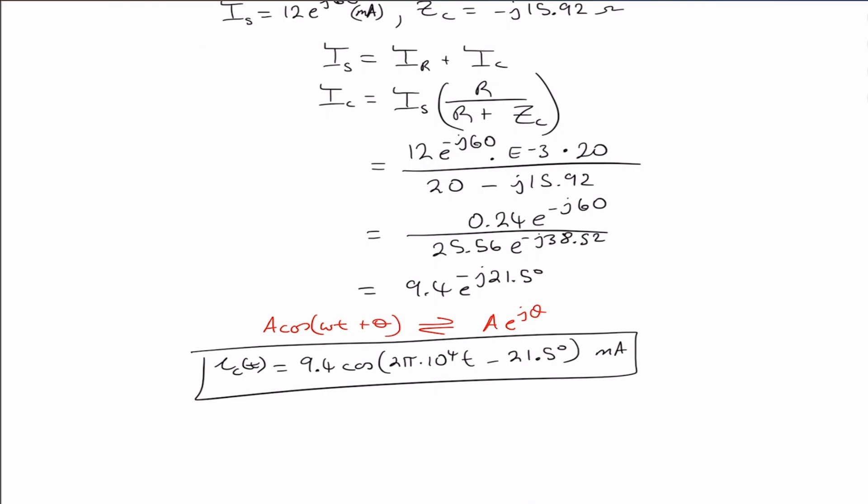So I_CFT is equal to the following. That is it for our expression. Also, I_CFT equals the real part of our phasor counterpart times the complex exponential e to the j omega t, which is 2 pi times 10 to the power 4 times t.